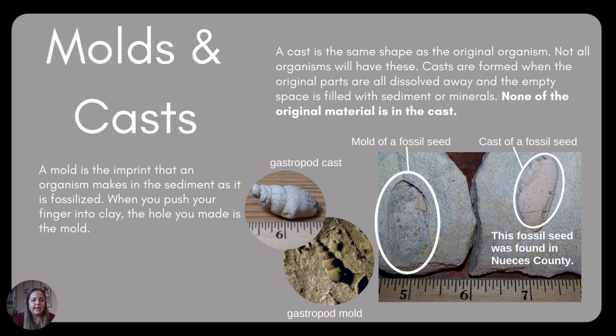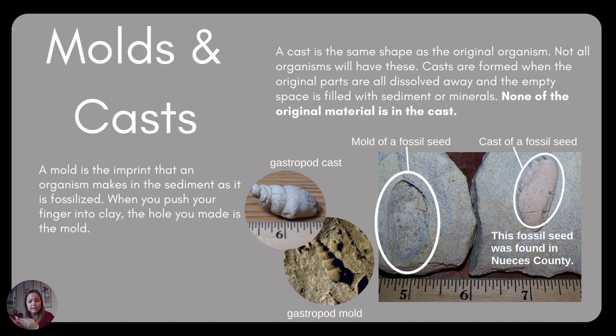Next, trace fossils — these are traces from the organism and how it lived. The first is a cast and a mold. A mold is an imprint that the organism leaves: you have a shell, it pushes down into sediment, you remove the shell, and what it left behind is a mold — like a cupcake mold. The cast would be if that impression was filled in with some other sediment and then removed, giving you a cast of the organism. The cast is what comes out of the mold, and the mold is the impression left behind by the specimen.